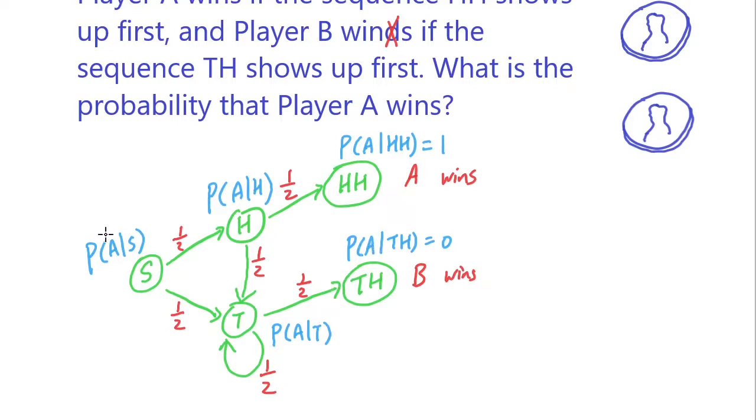Now our eventual goal is to find the probability that A wins at the start of the game. We can solve it by iteratively solving these two values. Let's look at the bottom one. P(A|T) is equal to half the probability that it's going to get into the TH state, plus the other half of the probability that it's going to loop back to itself.